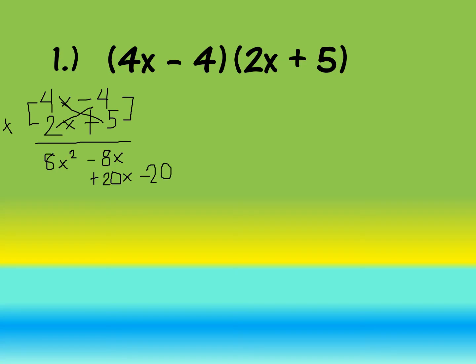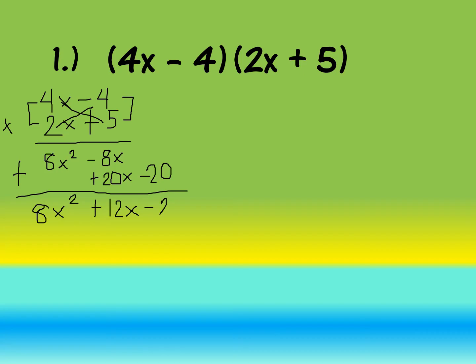Now add the like terms. 8x² has no matching term, so copy it. Next, add negative 8x plus 20x: since they have different signs, subtract: 20 minus 8 gives us 12, copy variable x, and copy the sign of the bigger number which is positive. Then copy negative 20. So the final answer using the vertical method is 8x² plus 12x minus 20.